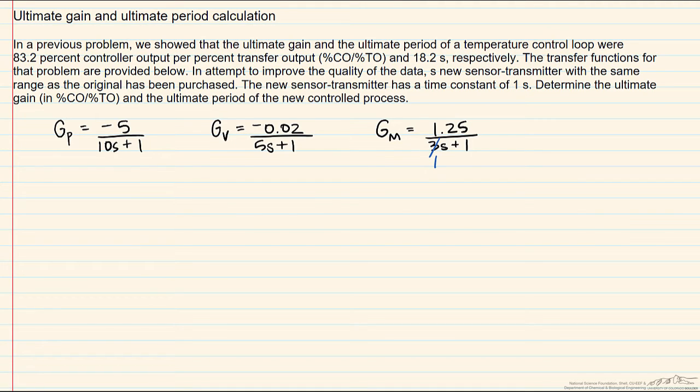We're going to define the ultimate gain and the ultimate period. This requires the use of direct substitution as shown in the previous screencast. We're going to need our characteristic equation which is one plus the open loop gain, which is one plus the transfer functions for the process, the valve, the transmitter, and the controller, and we set that equal to zero.